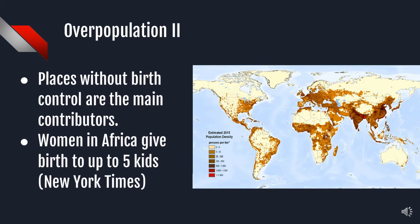Over 222 million women in the Middle East and Africa are having a great amount of children. These countries have women with up to five children at the age of just 24, according to the New York Times. Countries without proper birth control are the main contributors to a rising population.